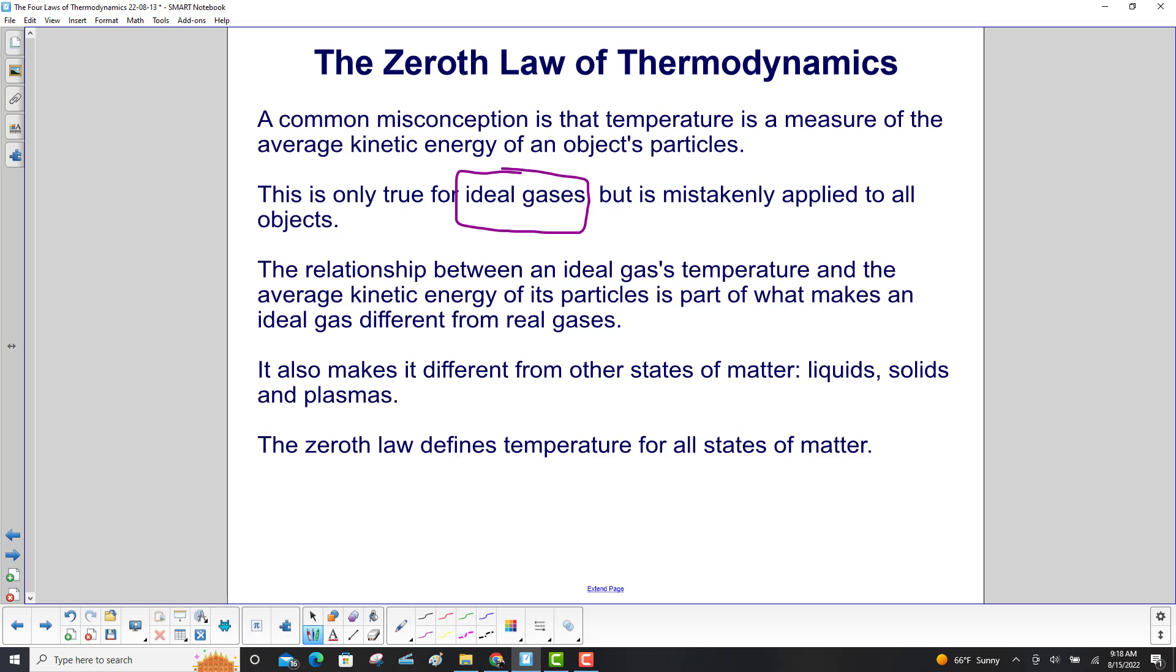The relationship between an ideal gas's temperature and the average kinetic energy of its particles is part of what makes an ideal gas different from real gases. It also makes it different from other states of matter: liquids, solids, and plasmas. The Zeroth Law defines temperature for all states of matter.